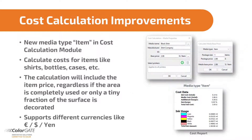In the Cost Calculation module, we have added a special feature for DTG and signage printers — the new media type item. This allows you to determine the costs for individual products such as t-shirts, bottles, bags or similar. The cost report then outputs the cost per item in the desired currency.